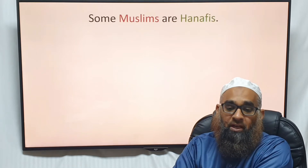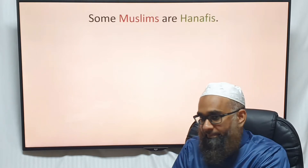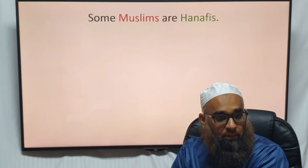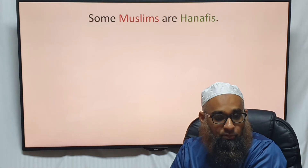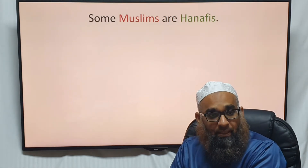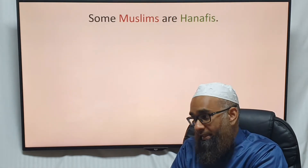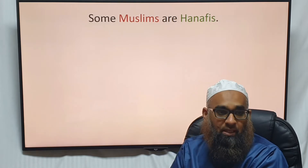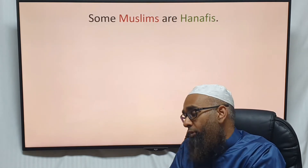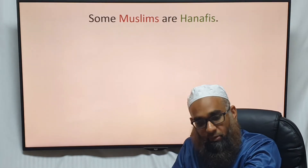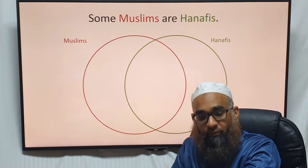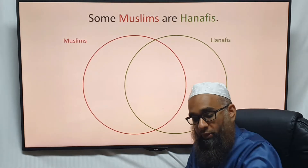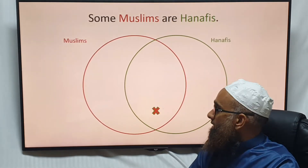Then we have: 'Some Muslims are Hanafis' — some Muslims from the Hanafi school of thought in Fiqh. What kind of proposition is this? It's an I proposition — affirmative but particular, not referring to the entire category. We have Muslims and Hanafis, and we can't shade anything out. We just put an X in the overlapping area.